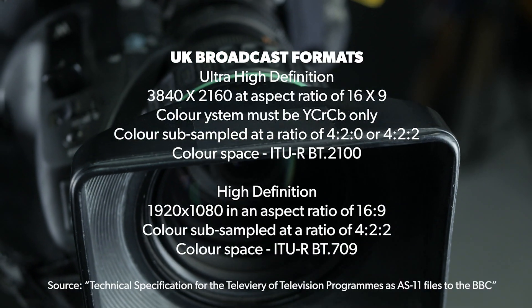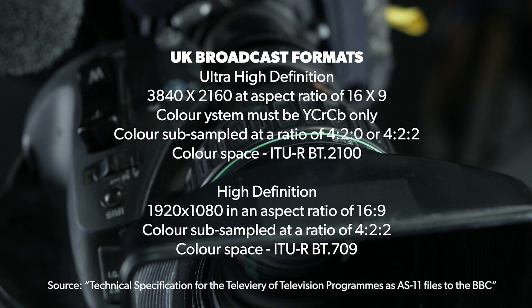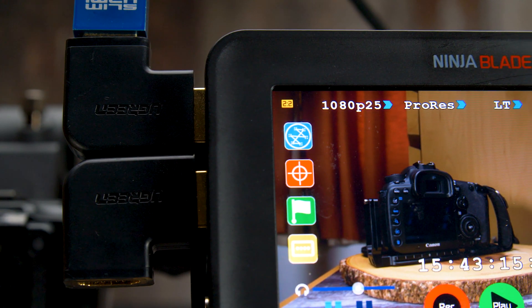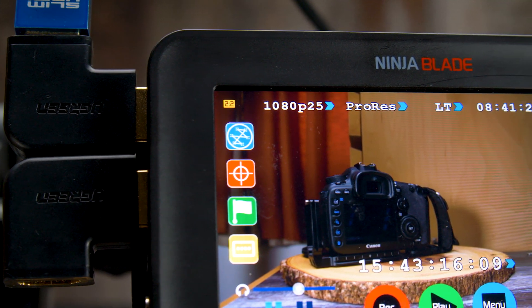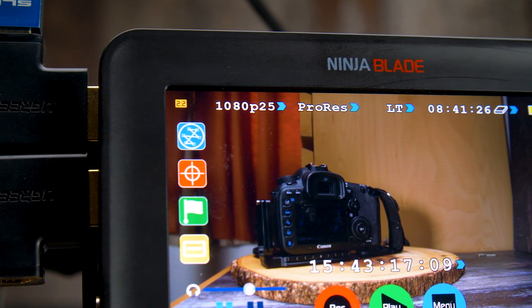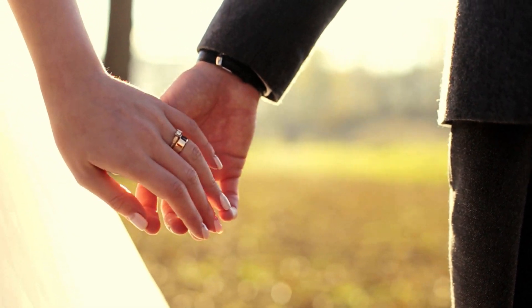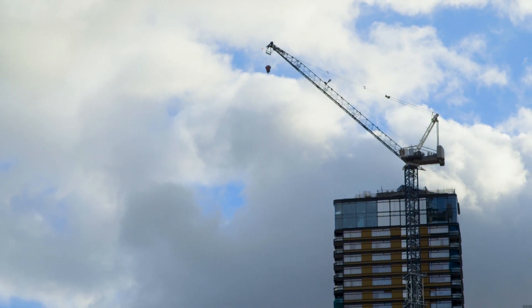If you do any kind of broadcast work, you need to deliver a minimum of 8-bit 4:2:2 here in the UK. I have done this many times using the Atomos Ninja Blade, and I actually prefer to use the ProRes 8-bit 4:2:2 files over the internal ones of the C100, because you get slightly more colour information which has always helped when shooting in high ISO environments. For weddings, events, and even most corporate work, you're going to be fine with 8-bit 4:2:0.